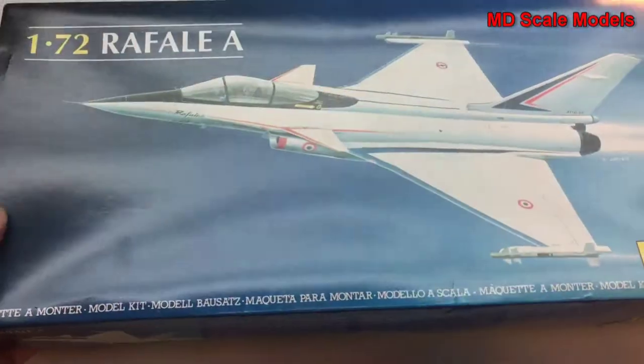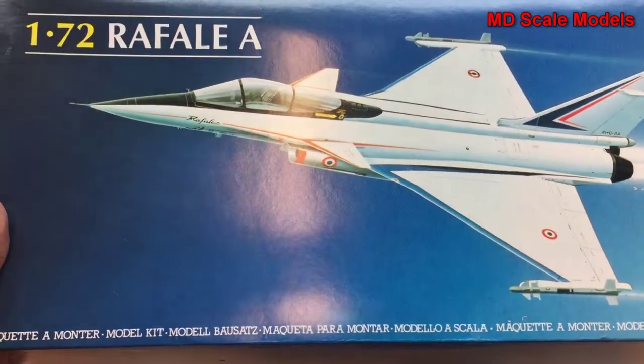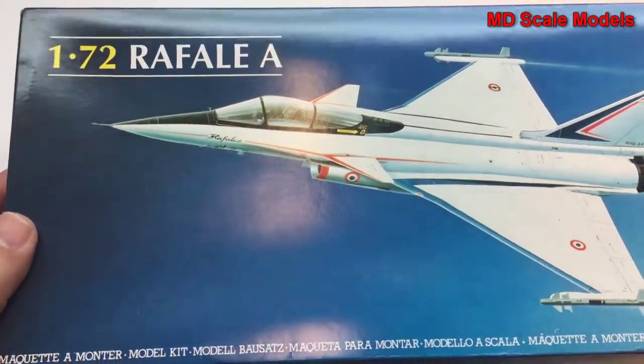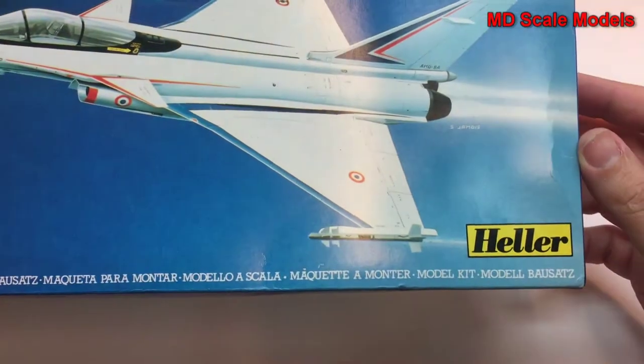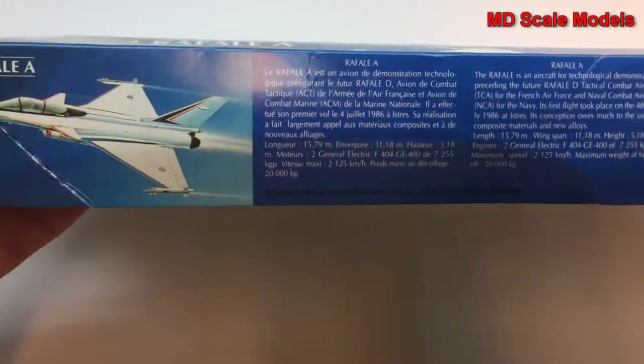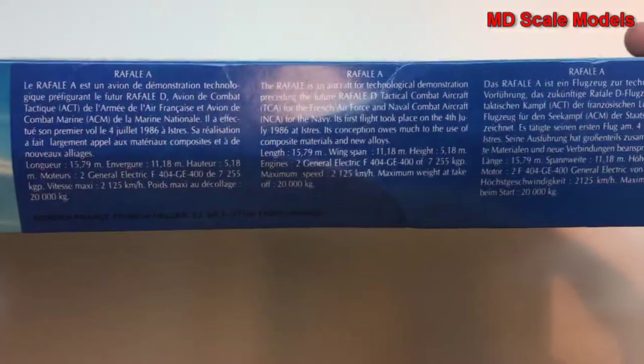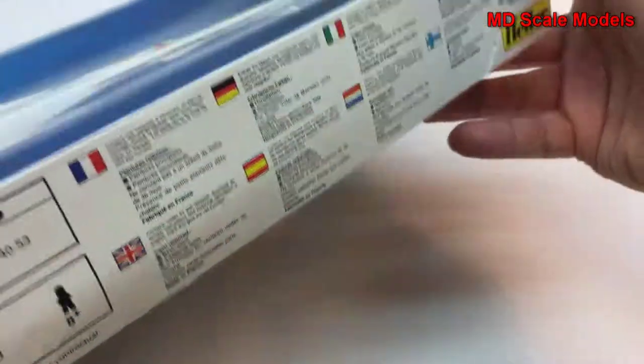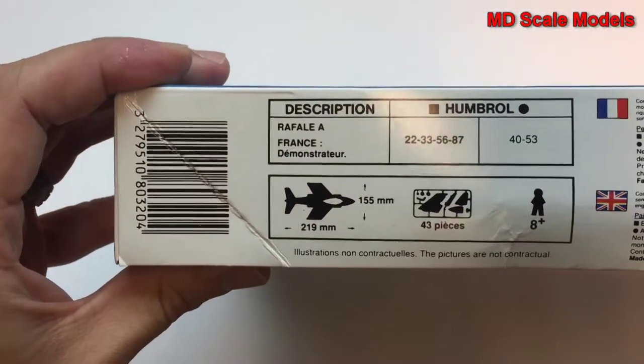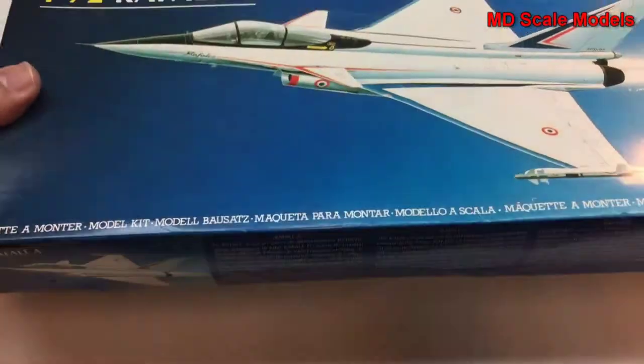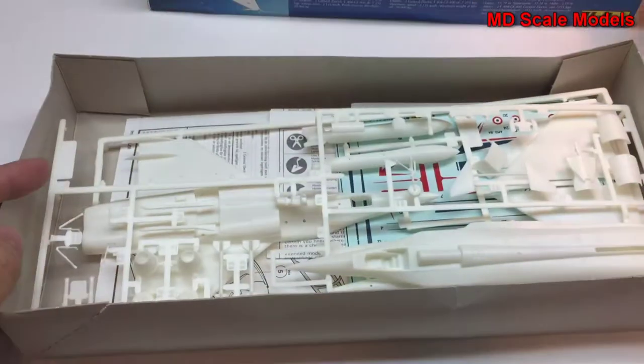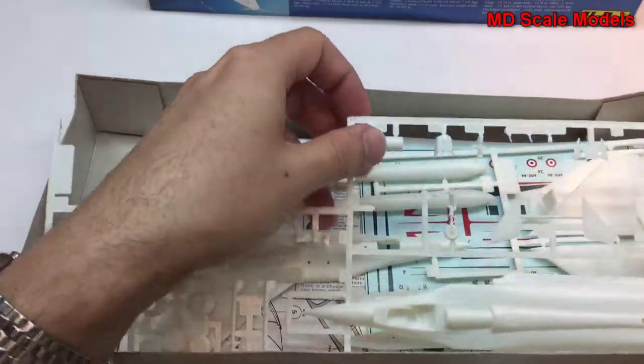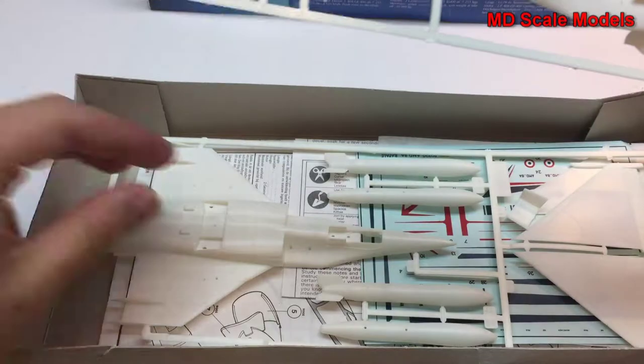This model kit review is of the 1/72 scale Rafale A by Heller. Down on the box it gives some of the dimensions of the model and number of pieces. Looking inside, there appear to be